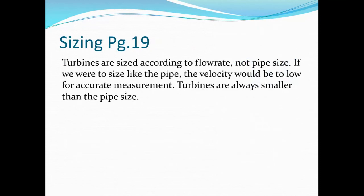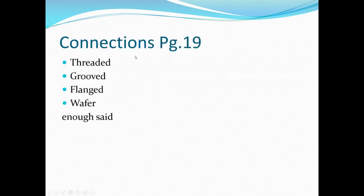Sizing: turbine meters are sized according to flow rate, not pipe size — they are almost always smaller than the pipe they're installed in. If sized the same as the line, velocity would not be high enough for proper operation. Connection types for installing turbine meters into piping include threaded, grooved, flanged, wafer, and other mounting styles.